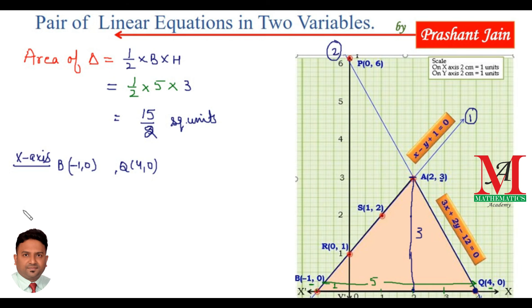And the points on the y-axis cut by these two lines are: This is the first point which cuts the y-axis, that is R(0,1) cut by the first line. And the second point is P(0,6). This is the total sum up about this question. In this question, we have covered all the points which can be asked in your upcoming examinations.